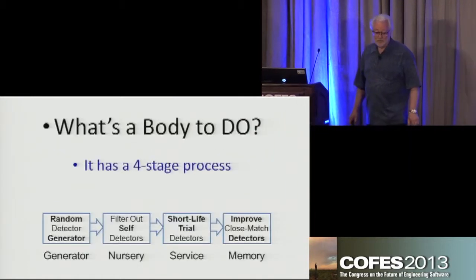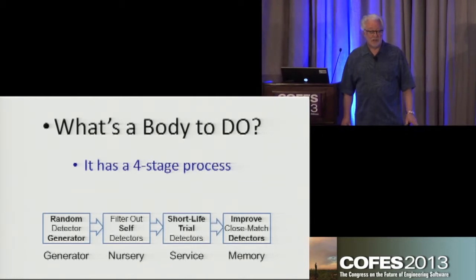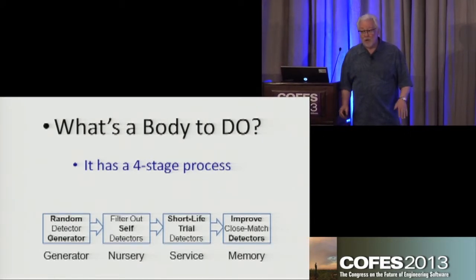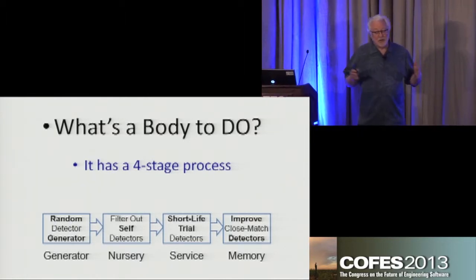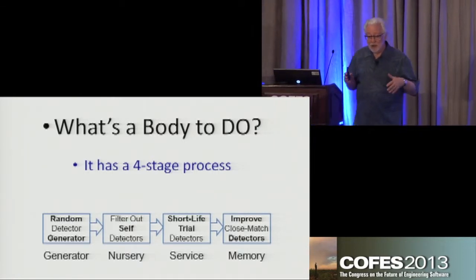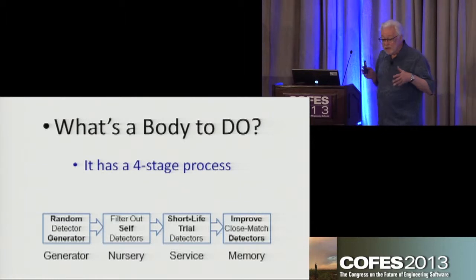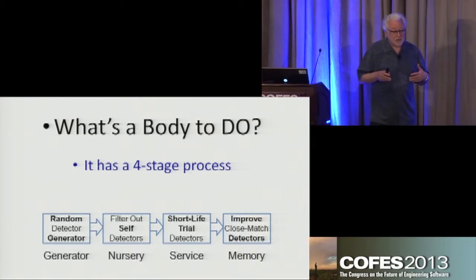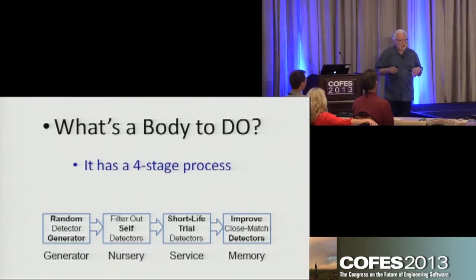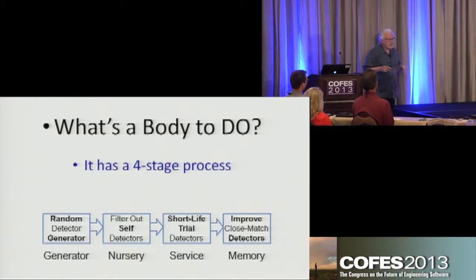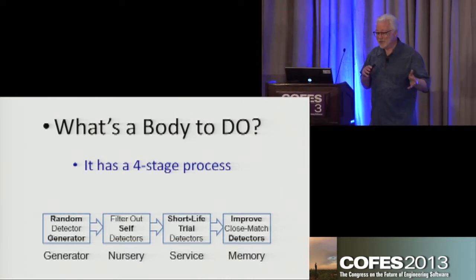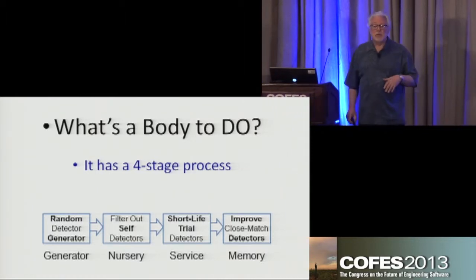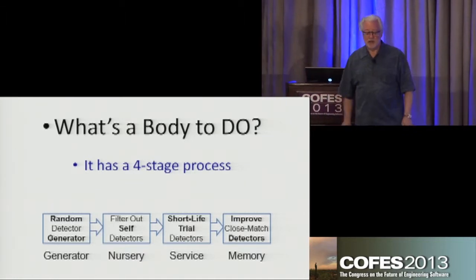What's a body going to do? In this case, we have a four-stage process. The immune system is going to generate a bunch of random detectors. Then it's going to make sure that these detectors don't actually want to detect something you'd like to keep, like your liver — so we have a filtration process. Then we stick them, if they pass that test, into a very short life trial period in the bloodstream — about two days. If they don't find anything in two days, the immune system kills them off. If they do find something, we go through a very interesting process of making sure we have a perfect match.